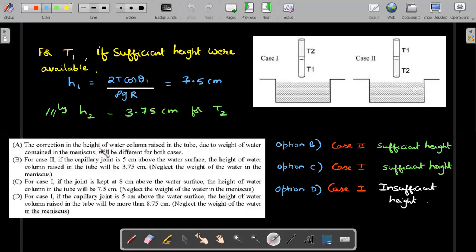Now look at the options. I'll deal with the option A for ambiguity in the next page. So let's go for B, C and D first. In option B, he's talking about case two, and he's talking about capillary joint five centimeters above, which means it's much higher than this h2 which we got. That means does it count as a sufficient height case? Yes. Therefore, the height will definitely rise only up till 3.75. So B seems to be correct answer.